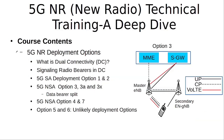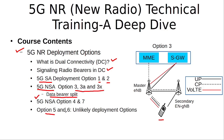Then we discuss different 5G NR deployment options: what is the dual connectivity between 5G and 4G, and how signaling radio bearers are used in dual connectivity. We discuss the 5G standalone deployment options, which are option 1 and option 2, and the 5G non-standalone options. We discuss how data bearer split takes place in option 3, 3A, and 3X, and also briefly cover option 5 and option 6, which are unlikely deployment options.